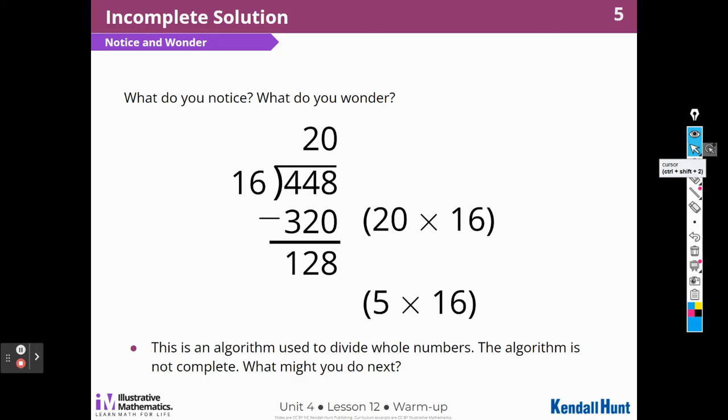This is an algorithm we use to divide whole numbers. The algorithm is not complete. What would you do next? Well, again, I would do 5 times 16, which we decided was 80. I would subtract that to see what I would need to do next. So 12 minus 8 is 48, right? And then I would try to come up with another multiplication. I would put the 5 up here, because I did 5 times 16 is 80, right?